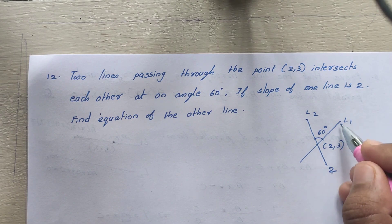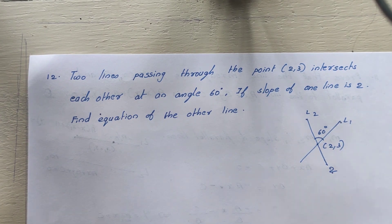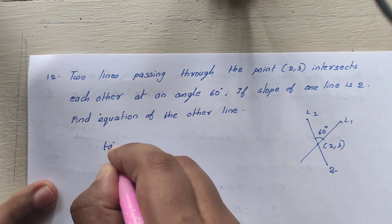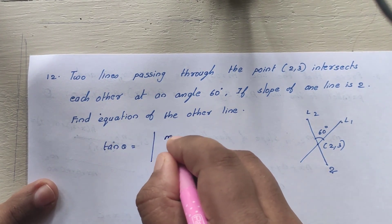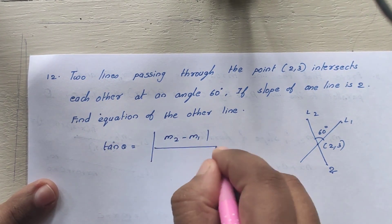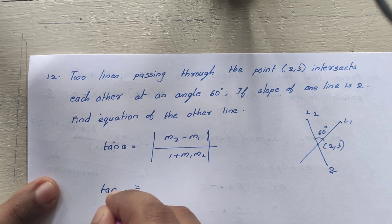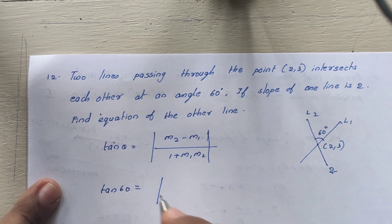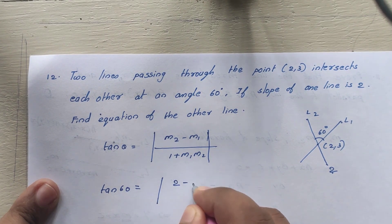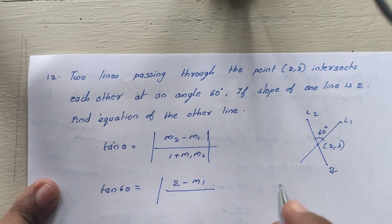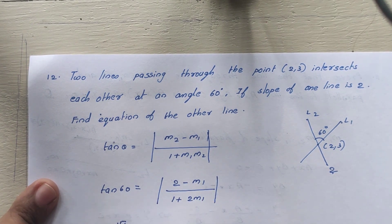Let L2 have slope 2, and L1 be the line whose equation we want to find. The angle between the lines is given by tan(60) = (M2 - M1) / (1 + M1*M2). So tan(60) = (2 - M1) / (1 + 2*M1).